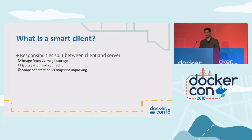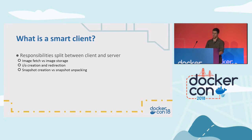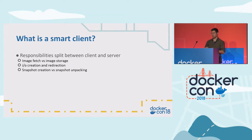What is a smart client? Responsibilities are split between the client and the server. The server doesn't do everything, and the client doesn't do everything. In the Containerd world, you're probably familiar with various Docker feature sets like image fetching and image storing. In the Docker world, you have a Docker pull. But in the Containerd world, the pull of the content from a registry happens all client-side, so you can have different authentication mechanisms, control how content is fetched, whether from cache or directly from the registry.